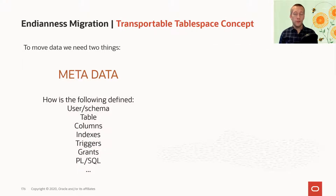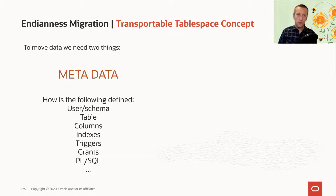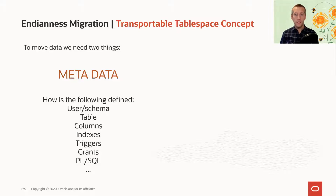One of those cross-endian migration methods is transportable tablespaces. Before we dig into the details, let's get a common understanding of what transportable tablespaces are. When you have to transport data from one database to another, there are two things we need. We need the metadata — this is information about the data: which table is it stored in, what are the columns, what data types are the columns, indexes, triggers, grants, PL/SQL, and so forth. This is considered metadata.